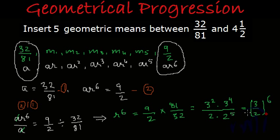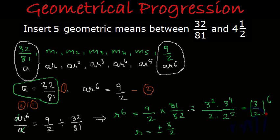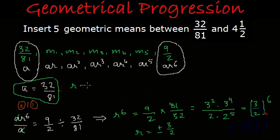Taking the sixth root of both sides, we get R = ±3/2. So we have the value of A from equation 1 and R = ±3/2, giving us both values needed to find all five geometric means.